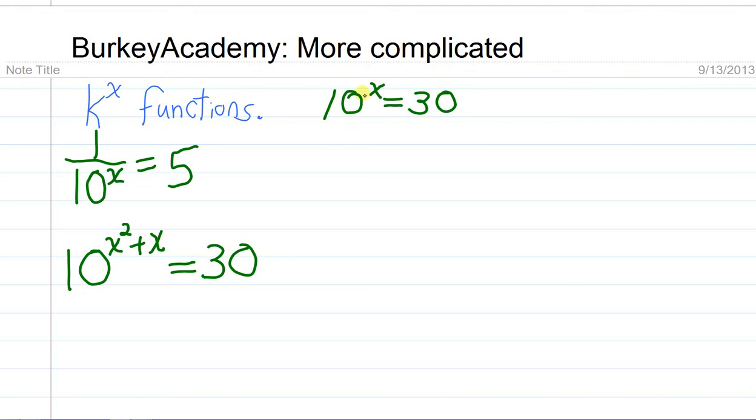then what that turns this function into is x times the natural log of 10 equals 30. And then once you find out the natural log of 10 on a calculator, I'm sorry, we should take the natural log of both sides, equals the natural log of 30.